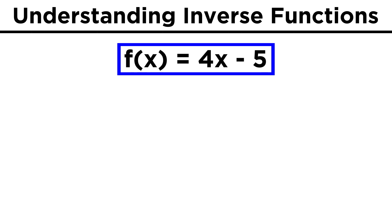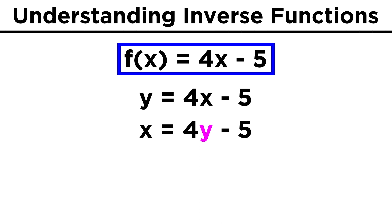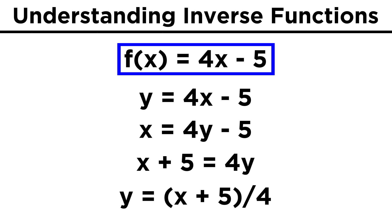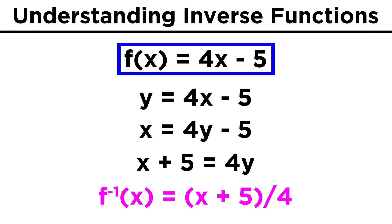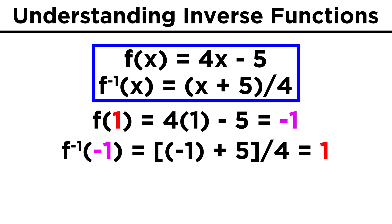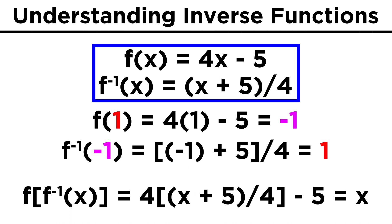Now that we understand the relationship between a function and its inverse function, we can try some trickier examples. Let's say we have f(x) equals four x minus five. Again, we change this to a y, swap places with x, and solve. We quickly see that we must add five and then divide by four, leaving us with x plus five over four as the inverse function. We could pick a value and evaluate, or plug one function into the other to see that these are indeed inverse functions, as each one systematically undoes each operation in the other.